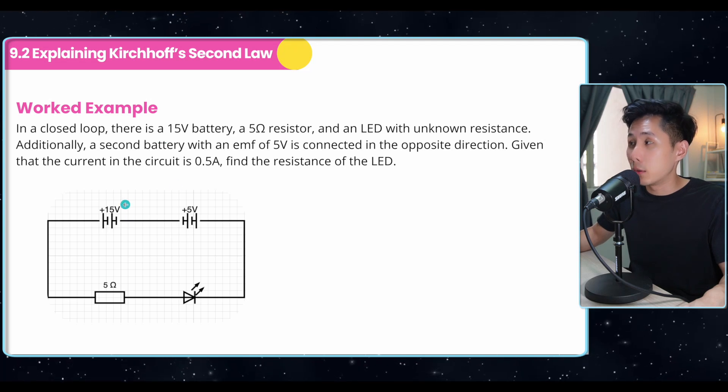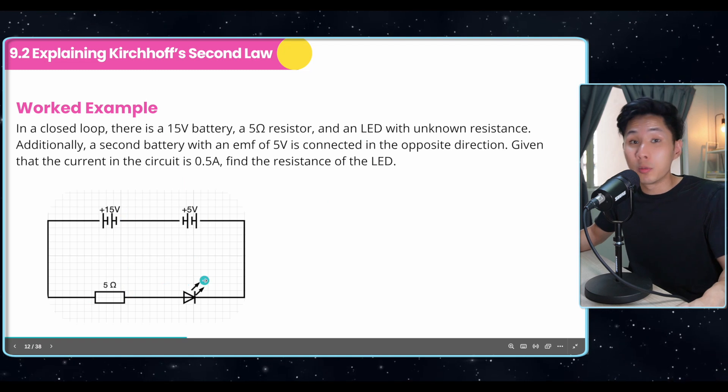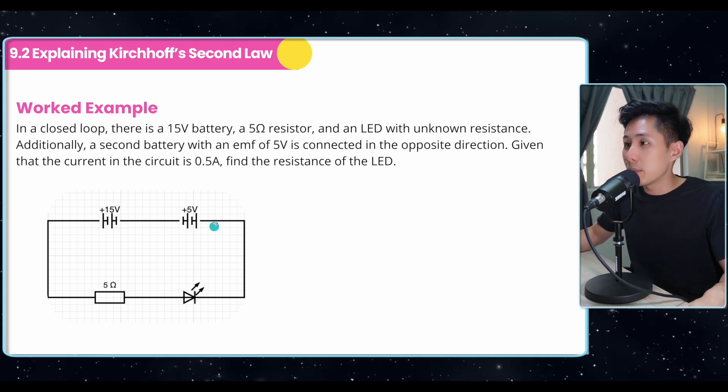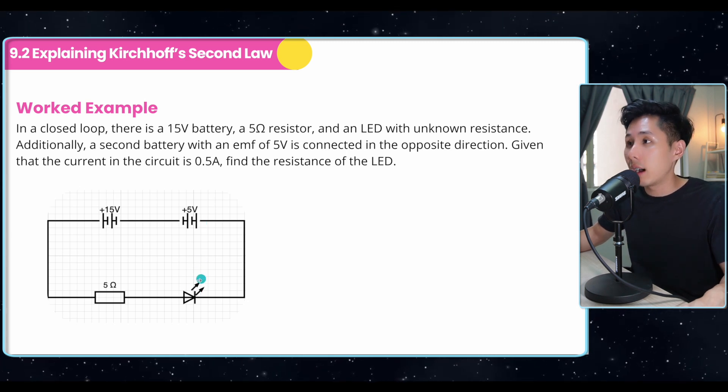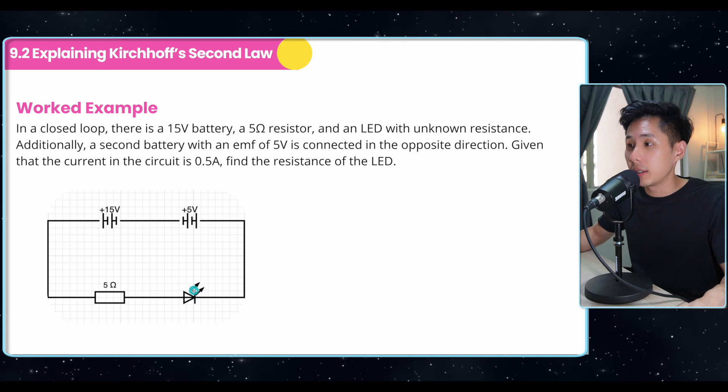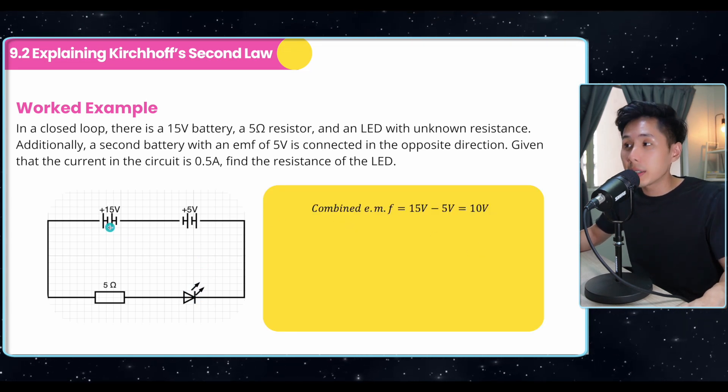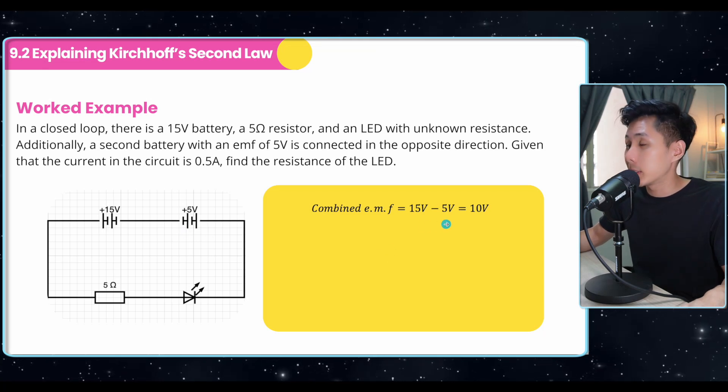In a closed loop, there is a 15-volt battery, a 5-ohm resistor, and an LED with an unknown resistance. So this is what we're going to find. They also say that the second battery is actually arranged in an opposite direction. How are we going to find out the resistance of this LED? The first thing you need to do is to calculate the combined EMF. Because the two cells are connected in a different direction, therefore we have to minus each other out.